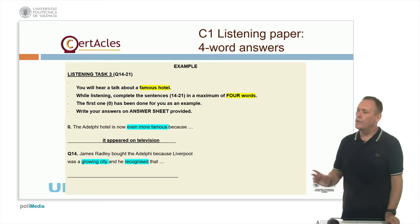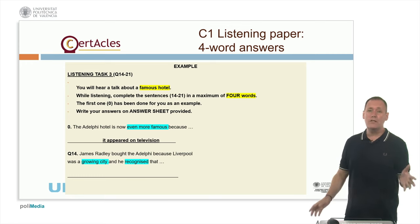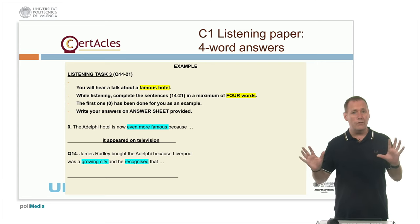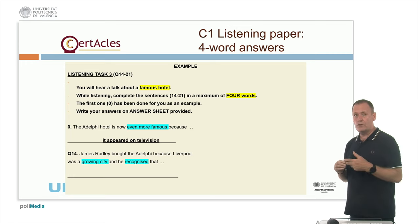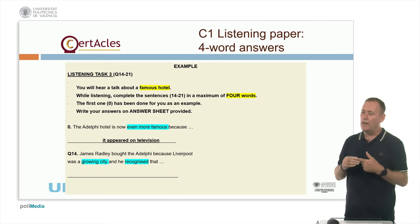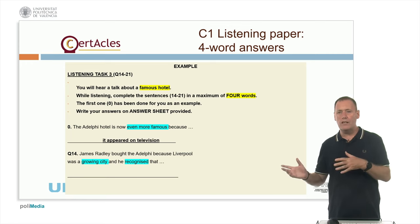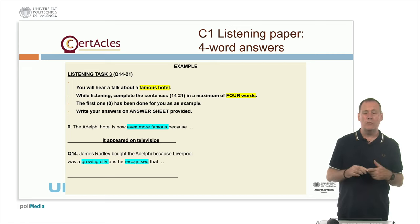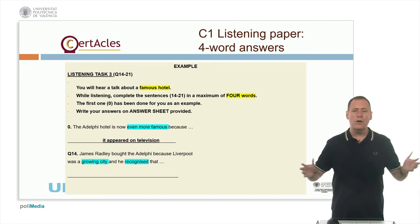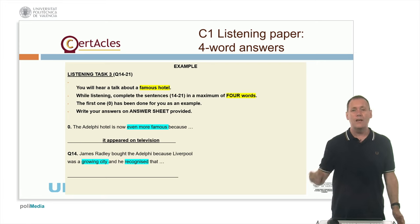A good way to prepare is to underline keywords. You'll hear a talk about a famous hotel — we need to know that. We need to know it's a maximum of four words. In some cases in the Taskles exams it might be three or five, so make sure you've looked at that. The Adelphi Hotel is even more famous — why? And there you'll get the answer. James Radley bought the Adelphi Hotel because Liverpool was a growing city and he recognised something — what did he recognise? These are key words to help us get what the answer might be. You might be thinking, what might he have recognised? You don't know the answer because you haven't heard it, but trying to predict it will help you focus later on finding the answer you need.